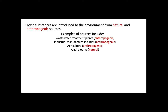First, it is important to understand the sources of toxic substances that make their way into the environment. These sources can be natural or anthropogenic, which means that they come from human activity. Examples of human sources include wastewater treatment plants, industrial facilities, and agriculture. One example of a natural source of toxic substances is algal blooms, which are associated with harmful toxins.